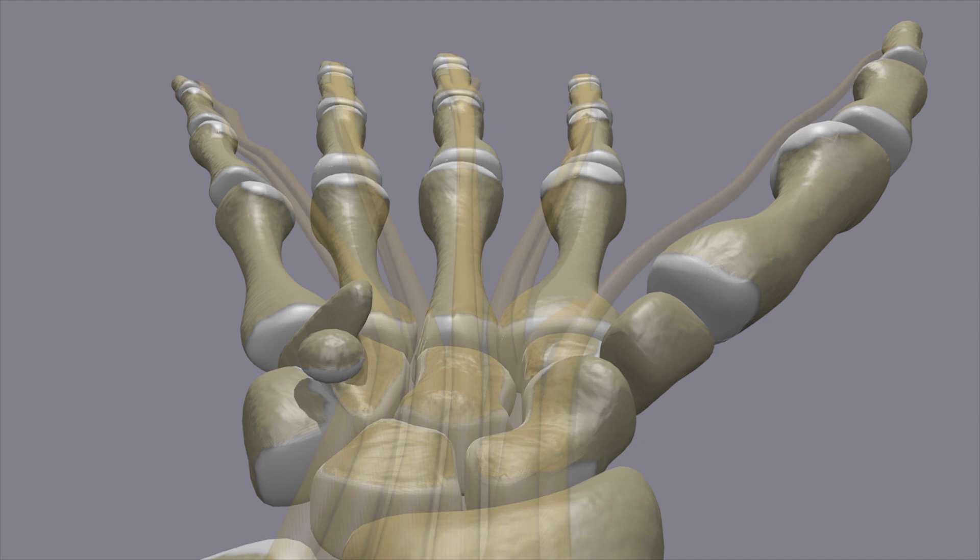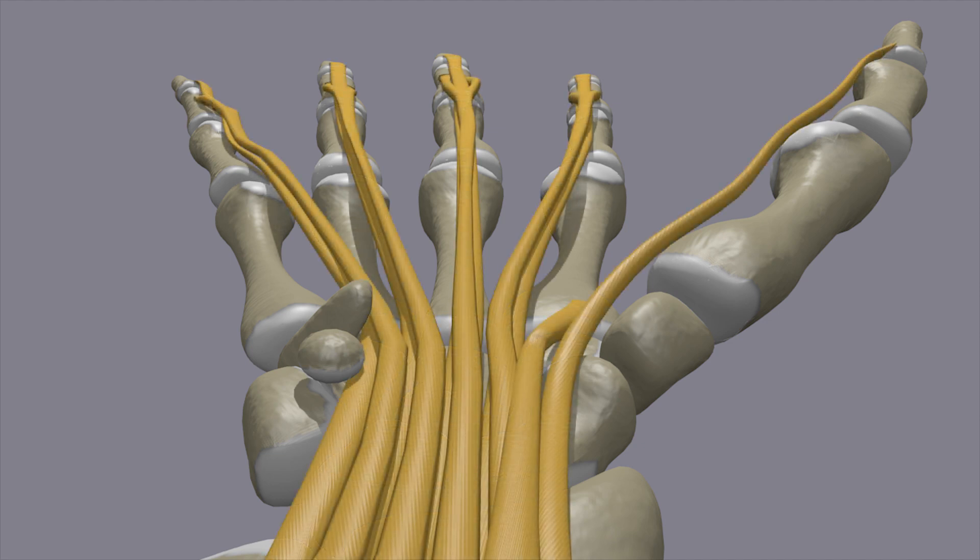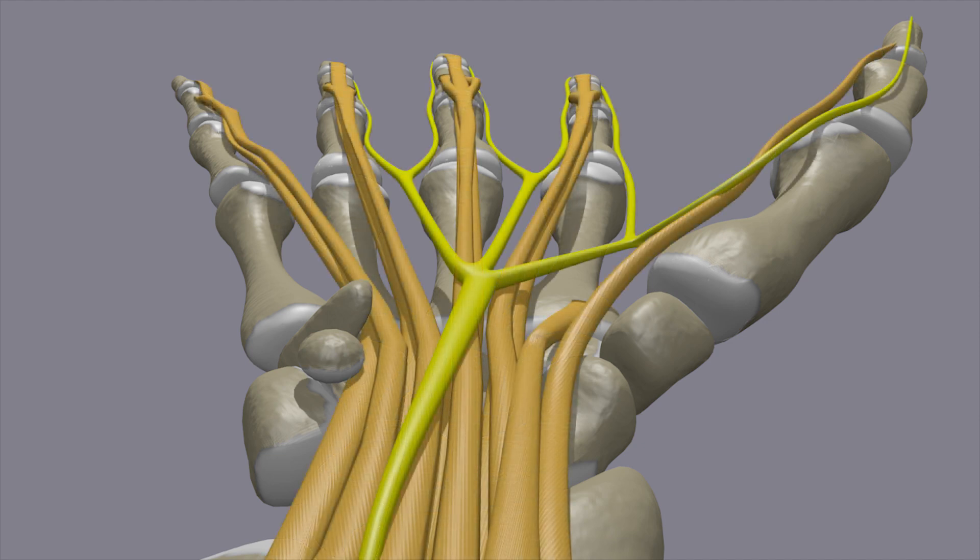The median nerve also passes through the carpal tunnel. The median nerve branches throughout much of the hand and most of the fingers. It carries signals back from the hand and fingers to the brain to provide sensation.